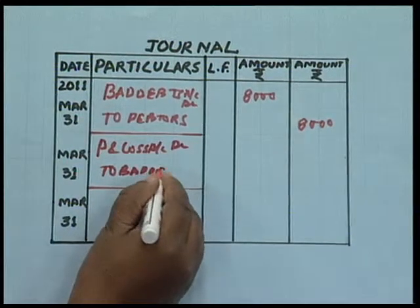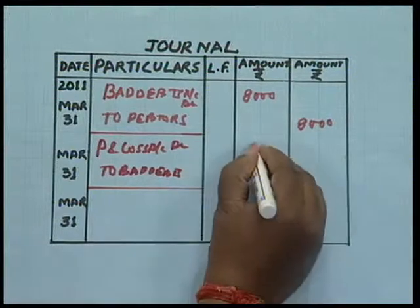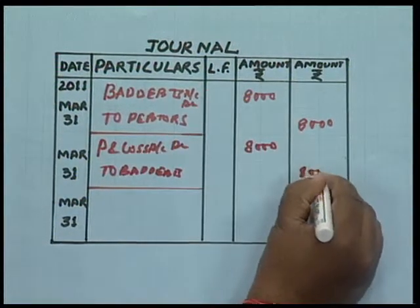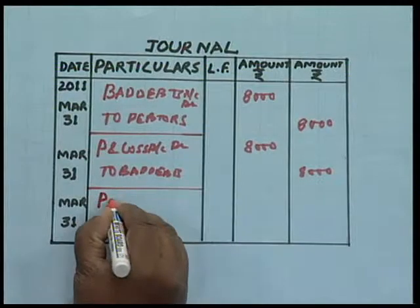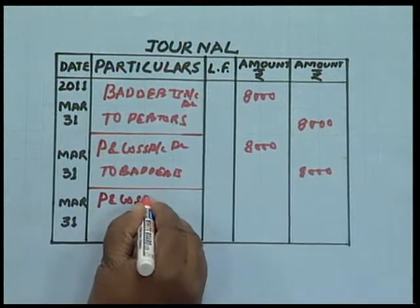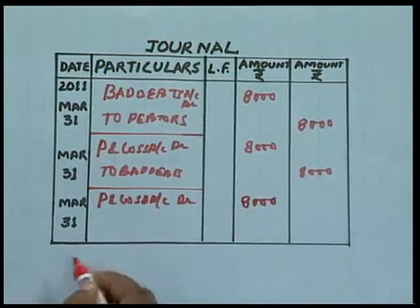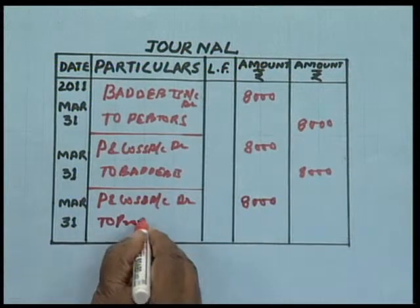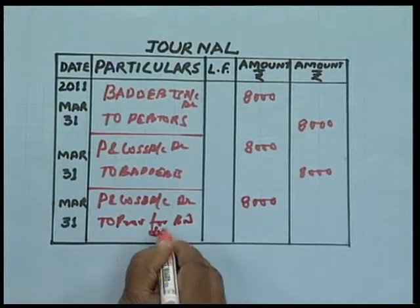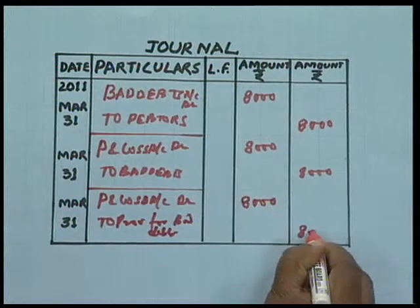After passing the entry for bad debts, out of ₹88,000 the ₹8,000 is deducted, so the remaining debtors are ₹80,000. We will now make the provision at the rate of 10% on the remaining debtors. The profit and loss account will be debited with ₹8,000 and credited to Provision for Bad Debts Account for ₹8,000.